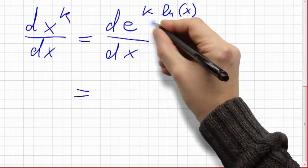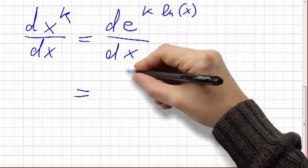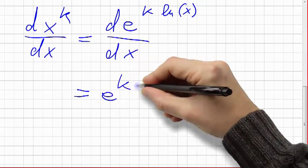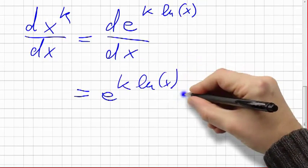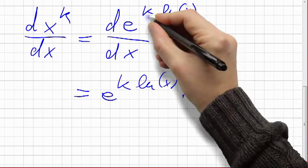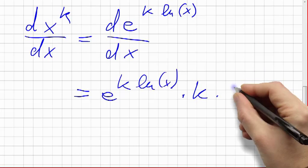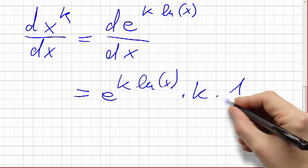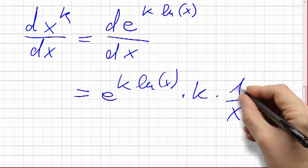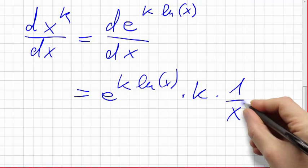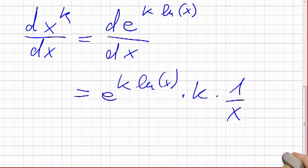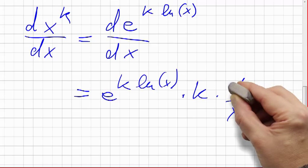Now we can use the chain rule. e to the something becomes e to the something, no change in there. Times the derivative of k times ln x, which is k times 1 over x. I should be writing an English one here.